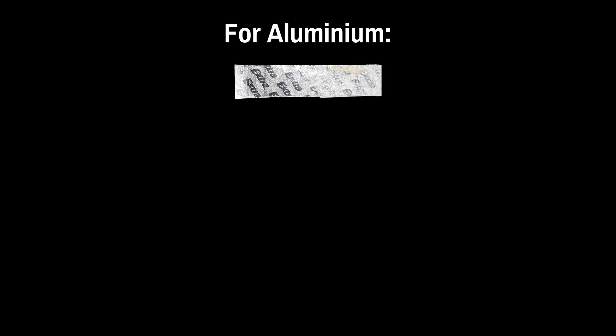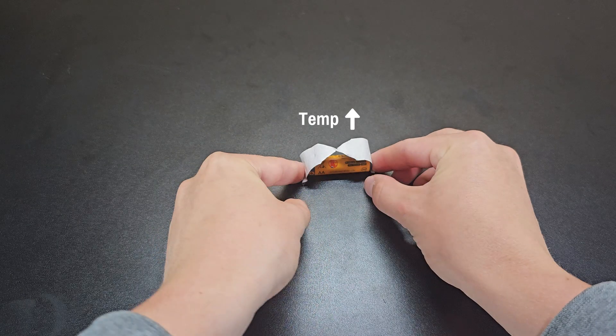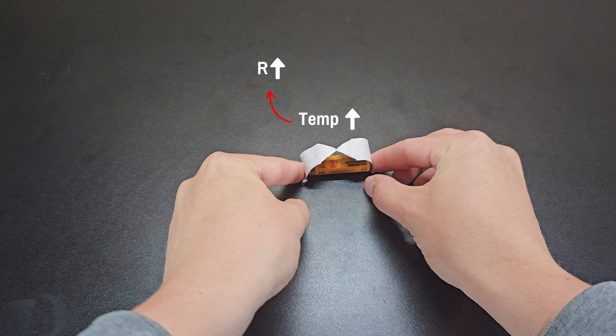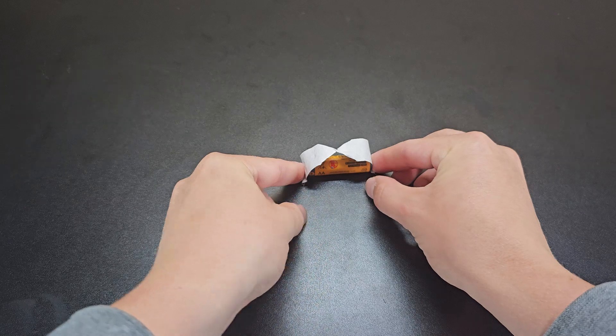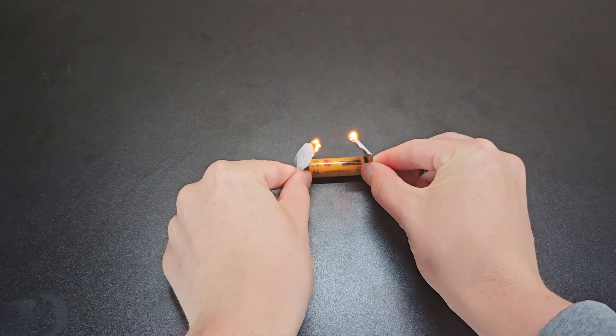There's one more factor that lets this work, which is that the resistance changes with temperature. So as the middle part gets hotter more quickly, the resistance also rises more quickly in the center, which further concentrates the power, resulting in a higher temperature, and this cycle continues until the paper coating is ignited.